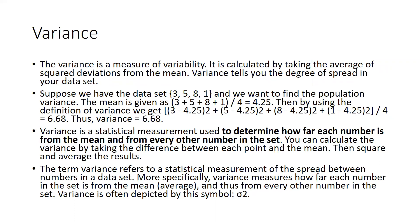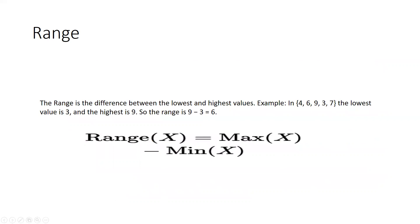Range means maximum minus minimum. For example, in the dataset {4, 6, 9, 3, 7}, the lowest value is 3 and the highest is 9, so the range is 9 − 3 = 6. The same calculation was applied to our marks dataset.